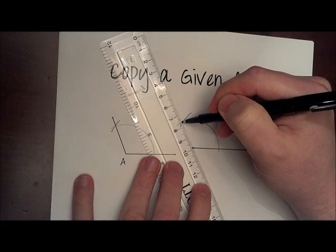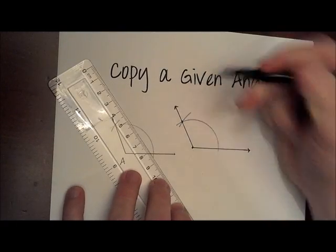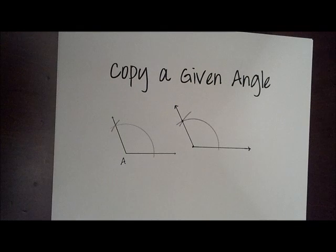Now that these intersect, we will draw the other side of the angle. We have now copied the given angle. The justification for this construction is side-side-side and CPCTC.